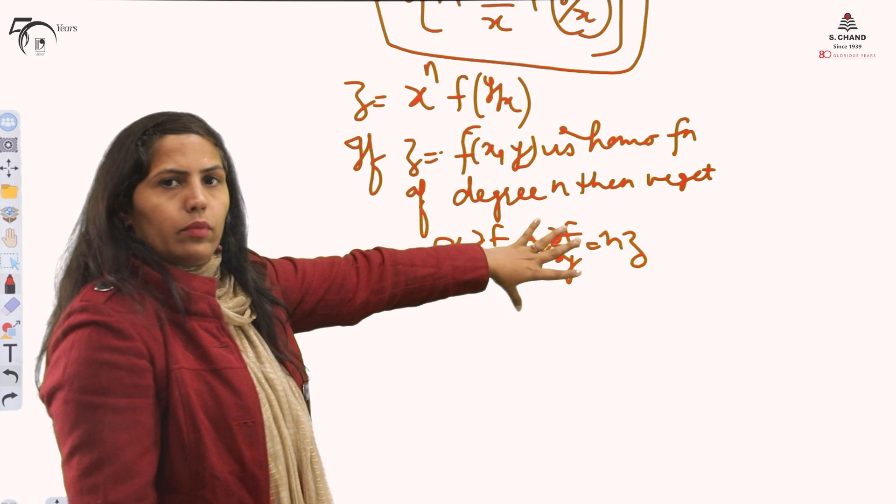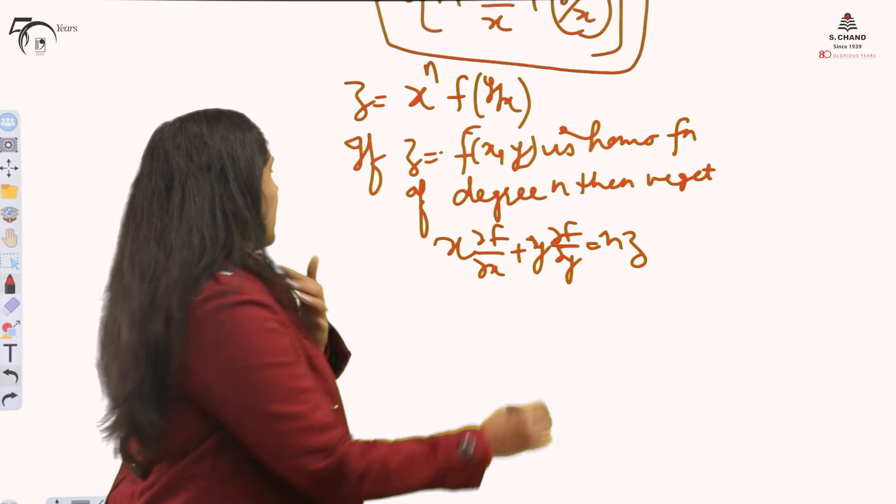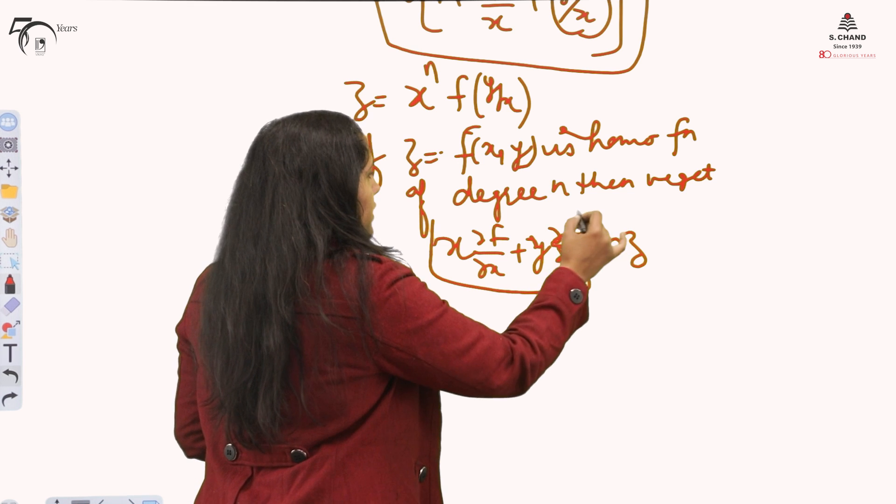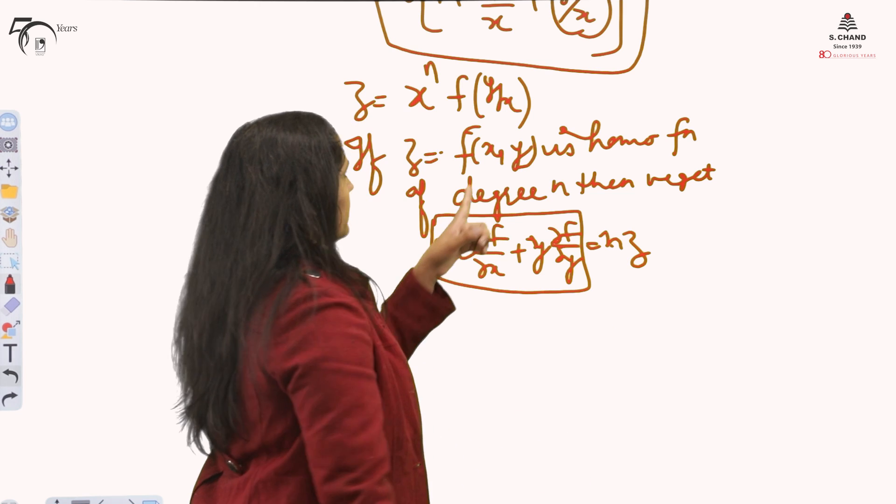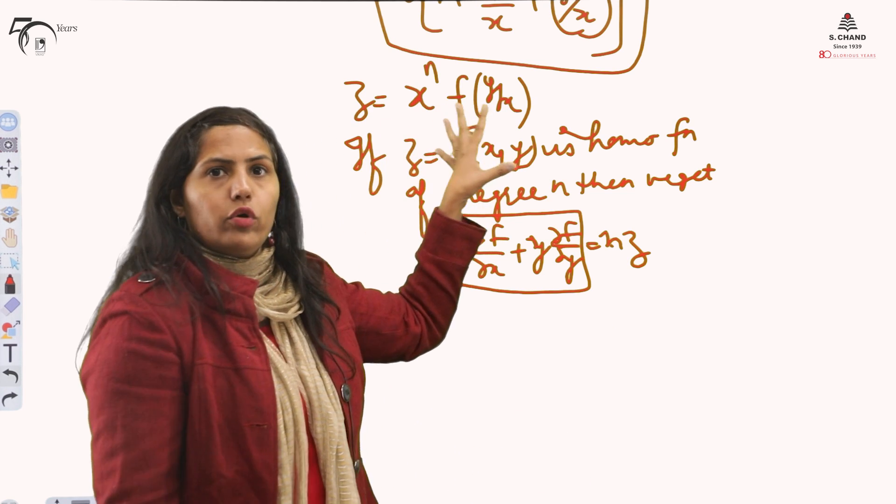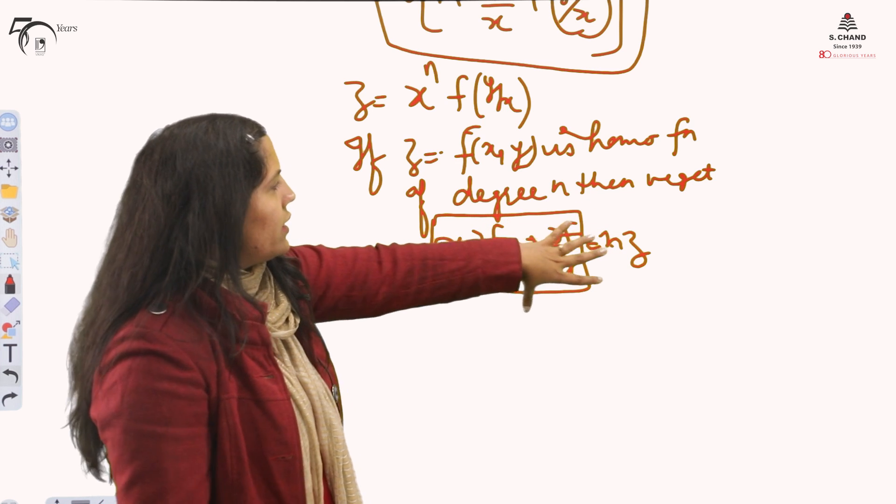You can see del f by del x, del f by del y, partial derivatives, and this complete expression value. Euler's theorem just states that this is just n into z. n is the degree, the power of x which is outside, and z is the function. This simplifies to n z.